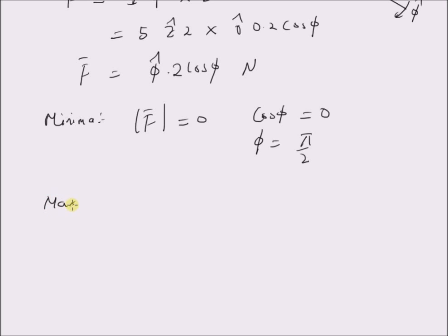And then maxima, that is the force reaches its maximum value at cos phi equal to its maximum value, which is equal to 1. Therefore, phi should be equal to 0.